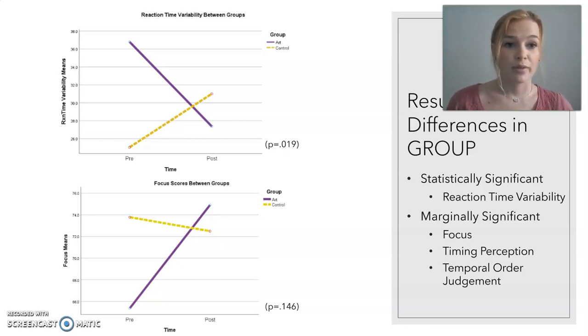Specifically, my experimental group, the purple line has a significant decrease, which means that the participants in that group became more accurate with their response times and they showed less fatigue after completing the collage.